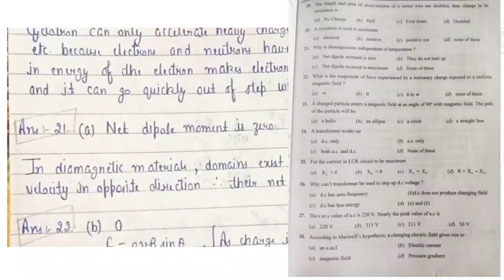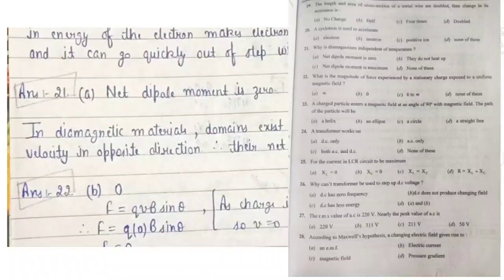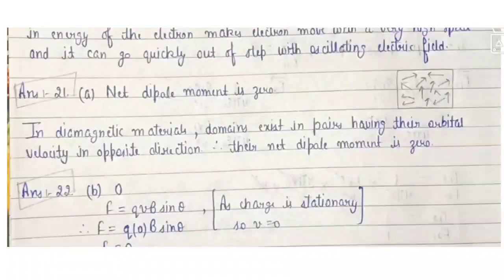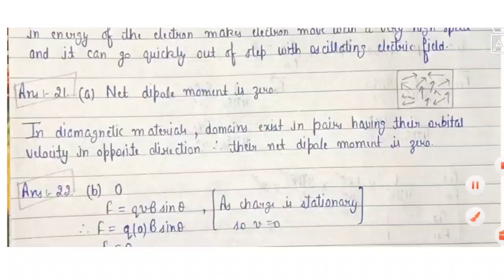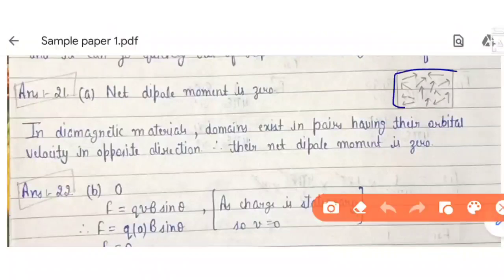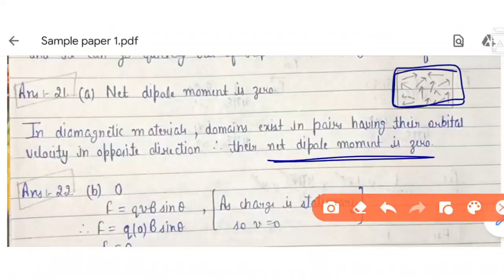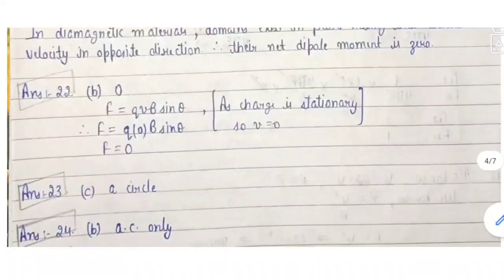Question 20 is easy. Question 21: why is diamagnetism independent of temperature? Because in a diamagnetic material, the net dipole moment is zero — there are no permanent dipoles and no particular direction alignment, so temperature does not affect it.